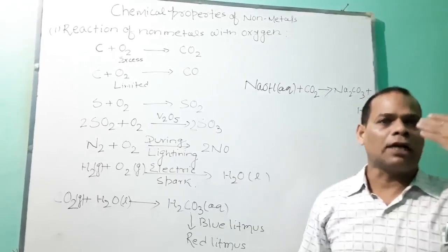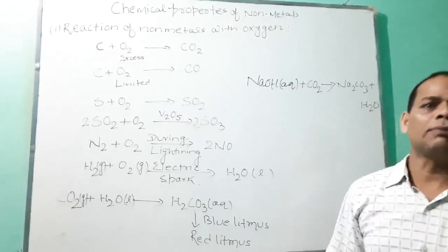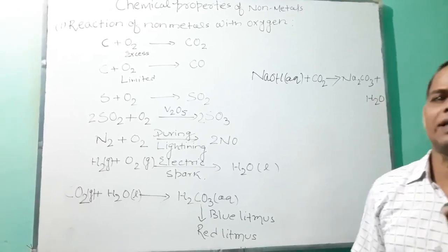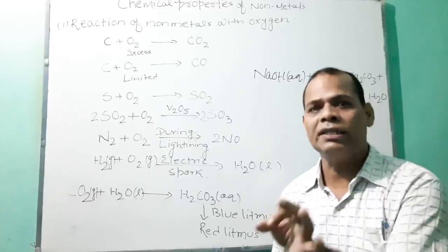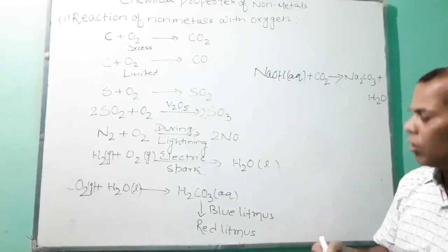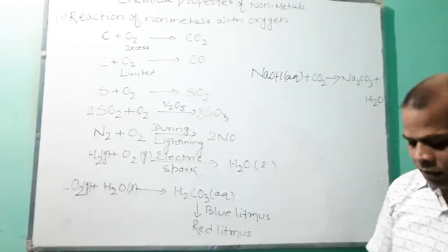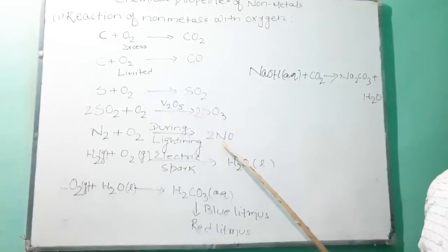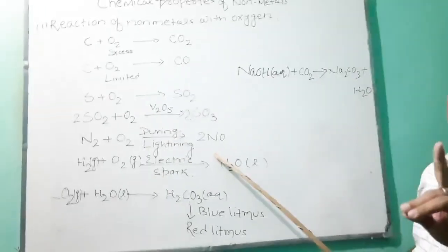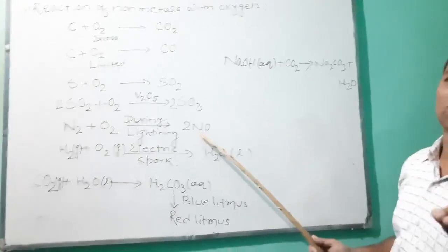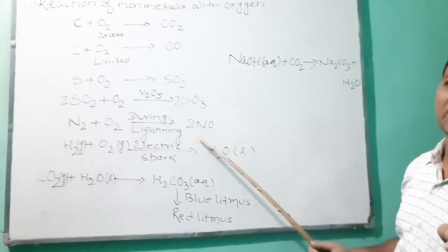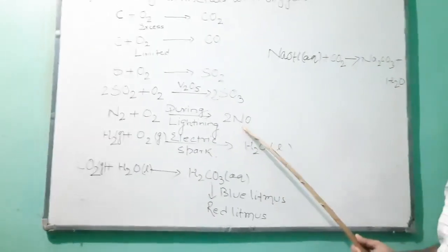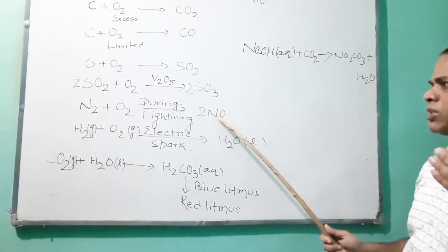With this we can conclude that the non-metallic oxide is acidic in nature. For the neutral ones, when passed through blue litmus there is no change — no change of color of blue litmus takes place.